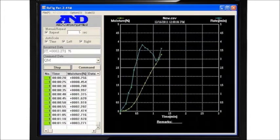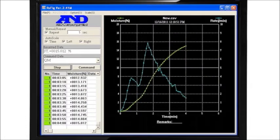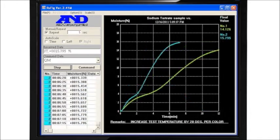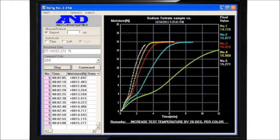Here, WinCT plots moisture content as it reaches its final value, and the change in moisture rate approaches zero, indicating the sample is now dry. Successive measurements at different temperatures are graphed in different colors.